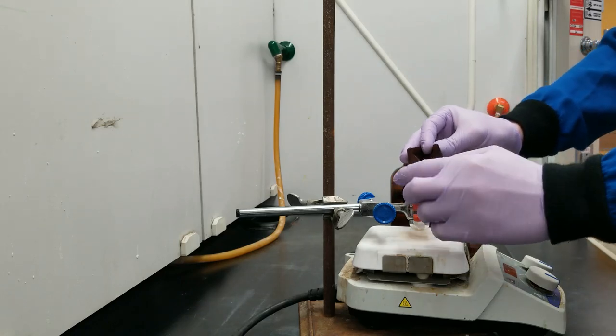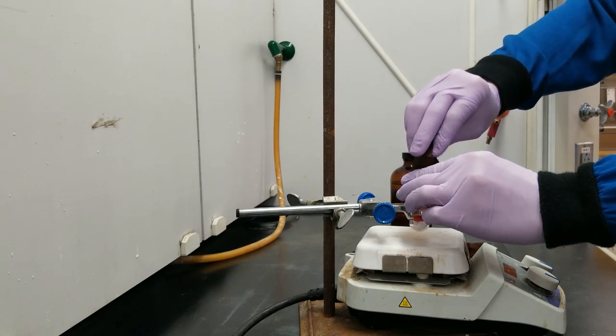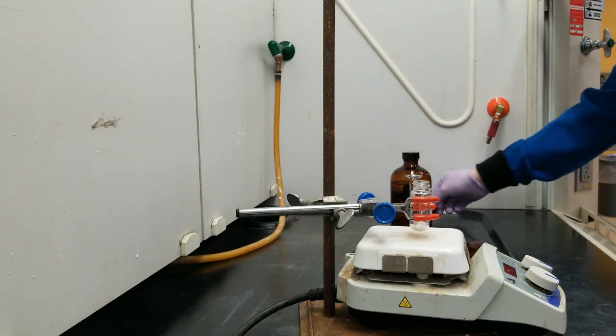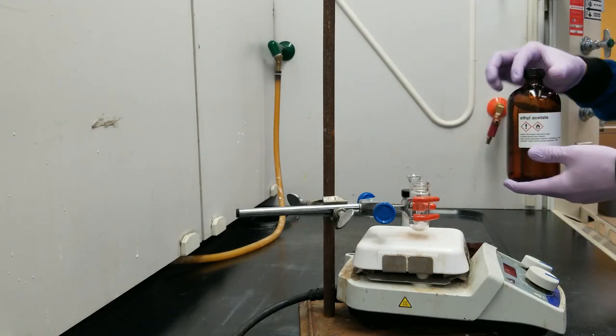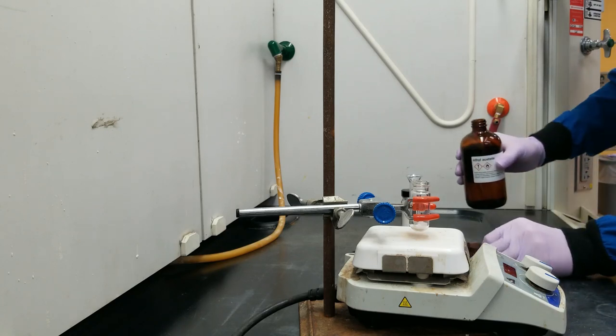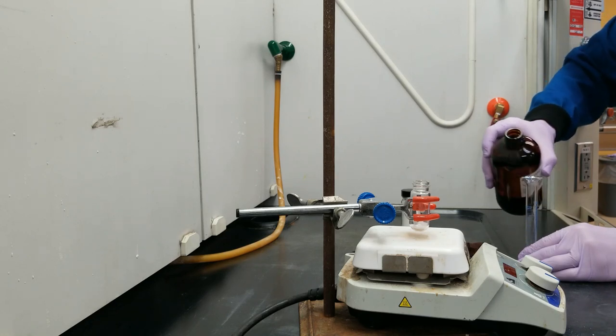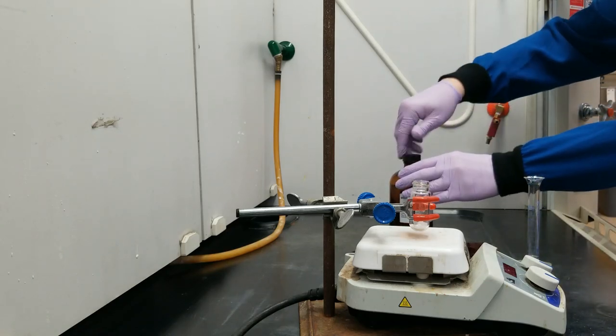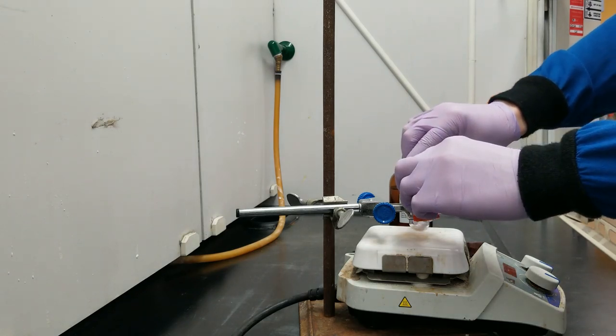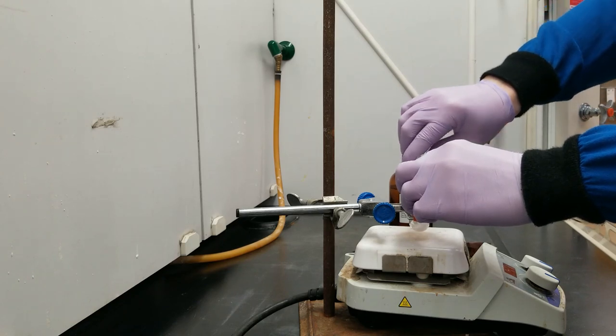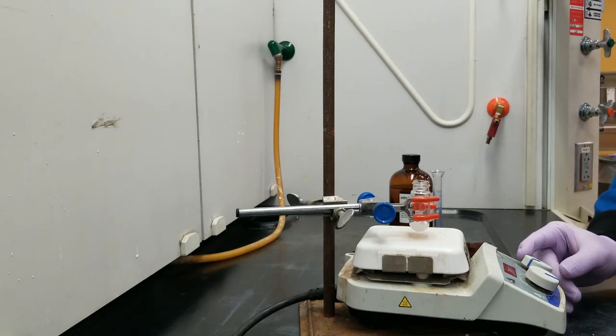So this is going to go into our 10-milliliter round bottom flask. This is going to be dissolved in ethyl acetate, which you can see right here. You can measure up one milliliter of this. And this is purely acting as the solvent in the reaction. It's not involved in the mechanism. One milliliter of ethyl acetate. And I'm going to go ahead and get this stirring, just to let that borneol dissolve.